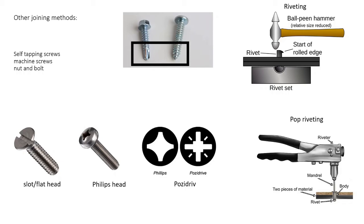Nowadays pop riveting is widely used. With a pop rivet gun — which is quite cheap — you still drill a hole through both materials, then squeeze the gun like a stapler to crush and join the pieces together. For screws and bolts you have different head types: flat head or slot head, Phillips head or cross head, and Pozi-drive, which is similar to Phillips but has extra contact points that reduce cam-out when using an electric screwdriver, making it less likely to damage the surface.